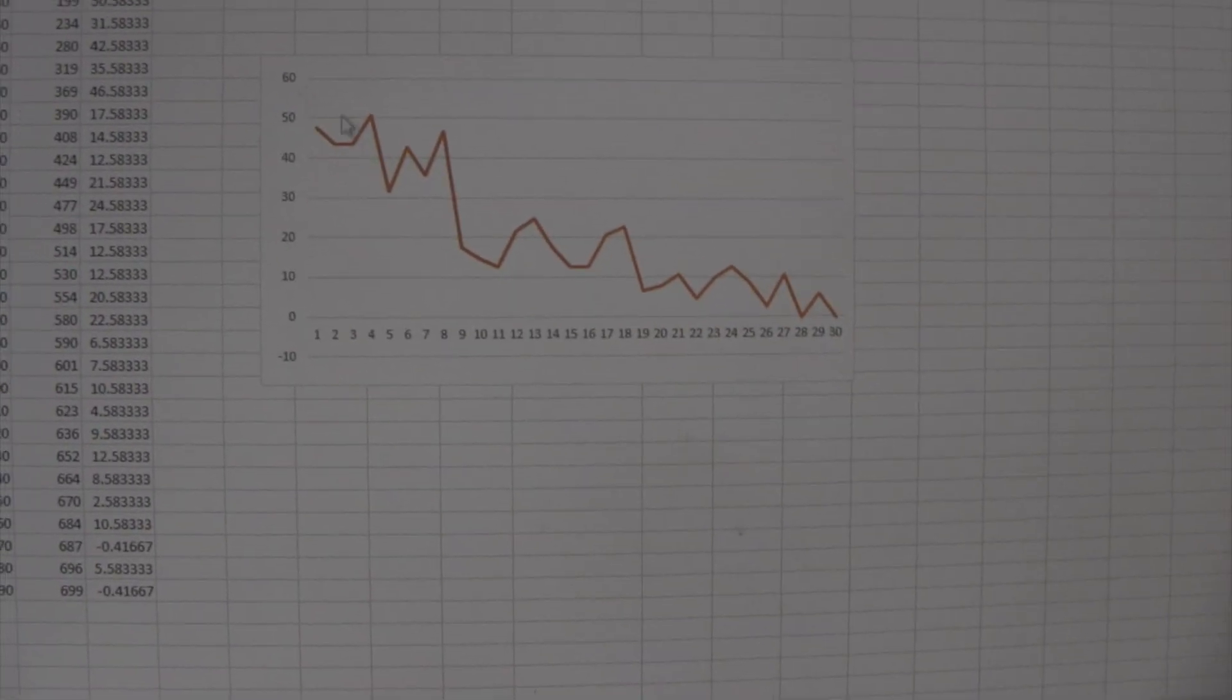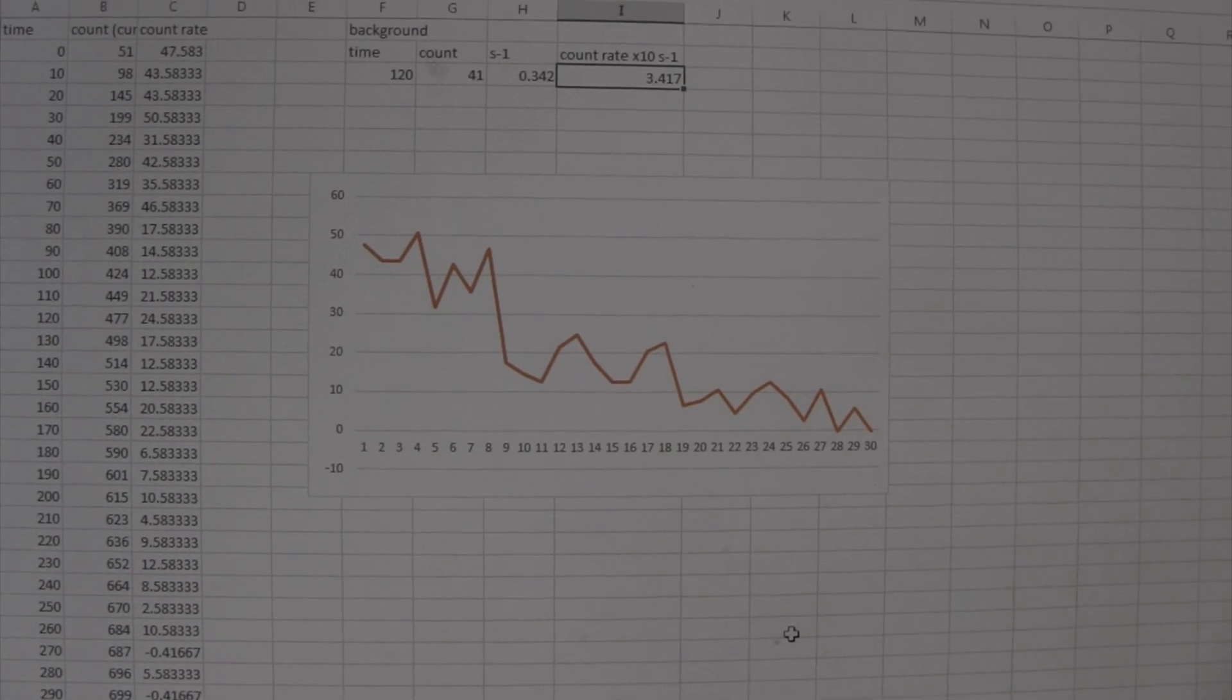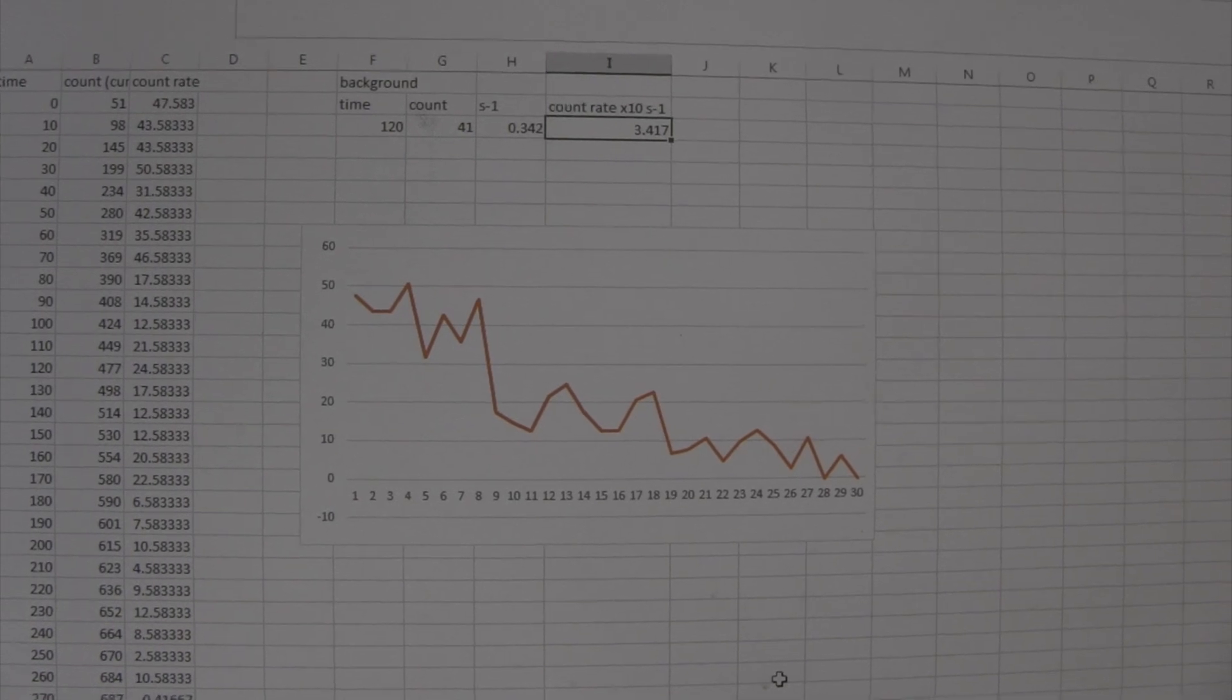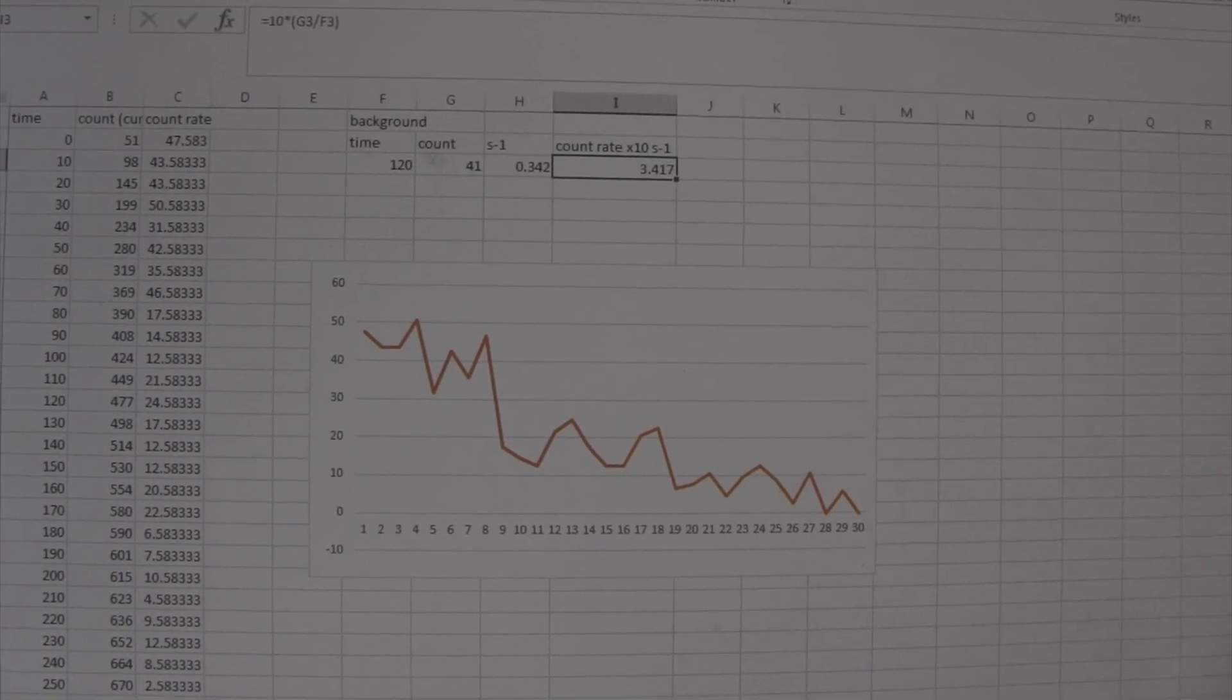And then I have plotted a graph for it, and if we were to add a trend line there, then we would see that it follows an exponential decay pattern. And then from that, we would be able to work out what the half-life of our sample was.